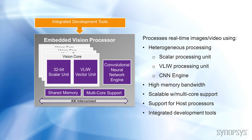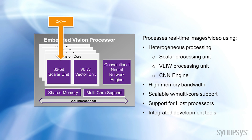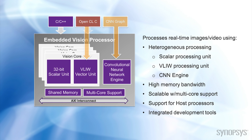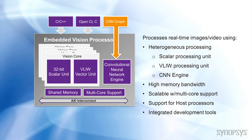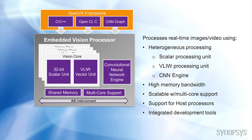All of this requires specialized software that integrates the features into a single, standard programming model. Programming in C works for the scalar processing unit, but to take advantage of the parallelism of the vector processing unit, an OpenCL compiler is recommended. In addition, designers need a tool to map the neural network coefficients and topology into the CNN hardware. OpenVX is the framework that combines all of these software pieces or kernels together.